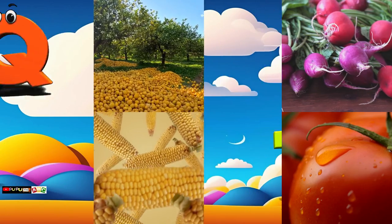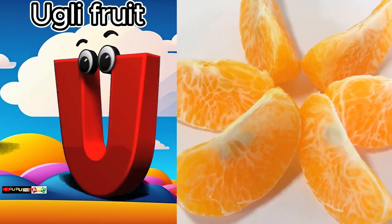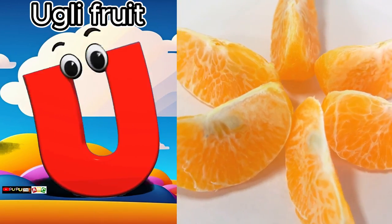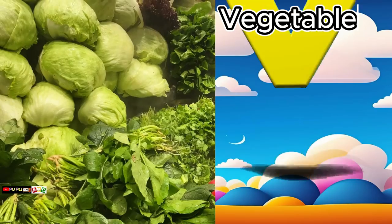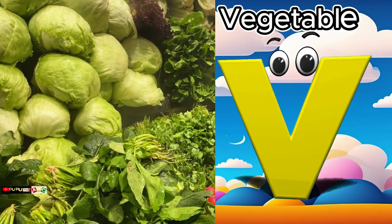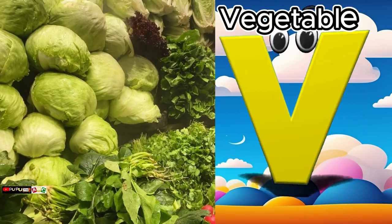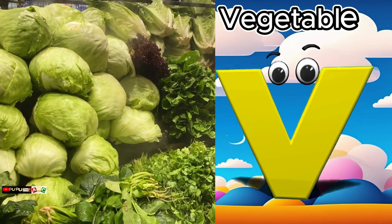U is for ugly fruit. U, U, ugly fruit. V is for vegetables. V, V, vegetables.